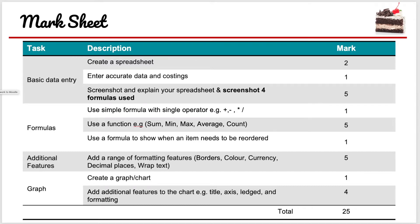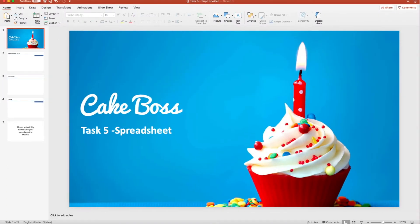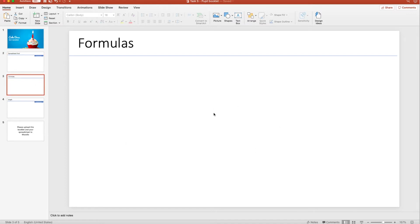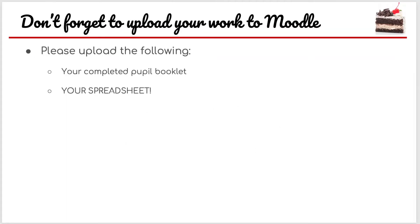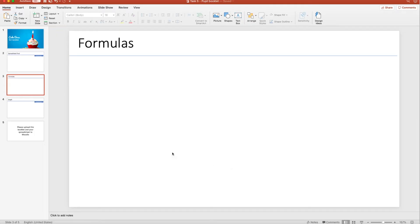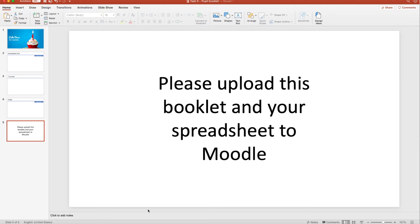Please make sure that you complete the pupil booklet and upload your spreadsheet. The pupil booklet won't be that big with this one — what I'm after is basically a screenshot of your spreadsheet with some notes next to it, and then I need you to choose a few formulas. I need a minimum of four formulas and I need you to explain what the formulas have done as well. It's no good just saying 'this is the formula I used' — try and explain it. I also need to see the graph, and then you can make notes of any features before re-uploading everything back to Moodle.